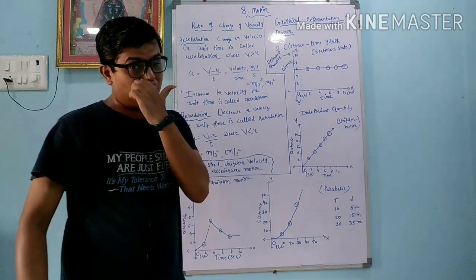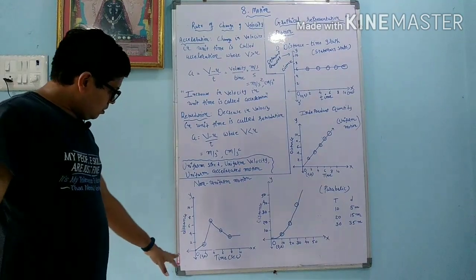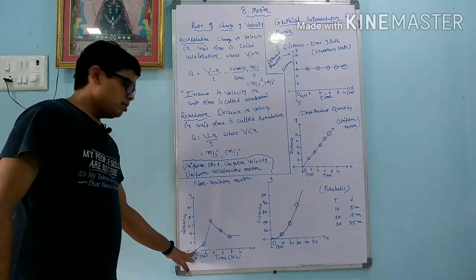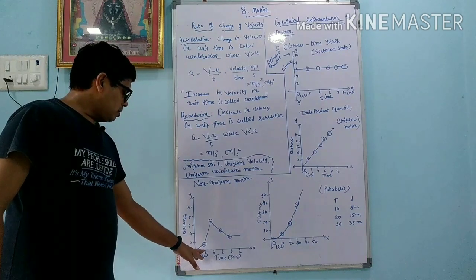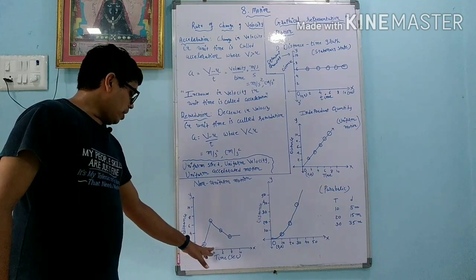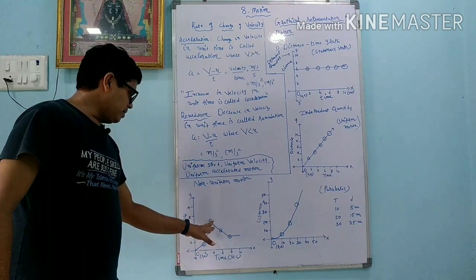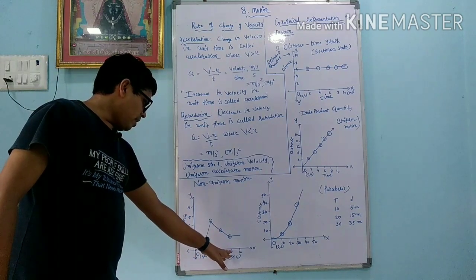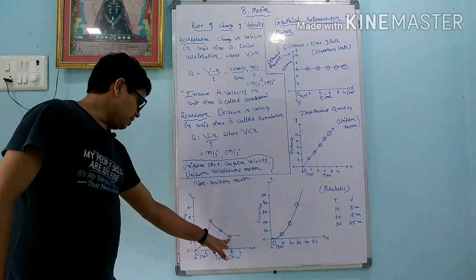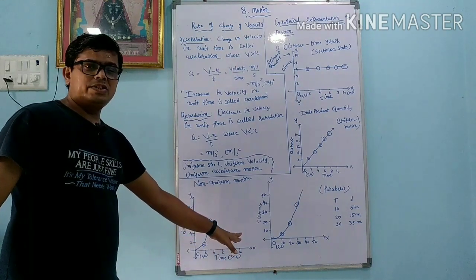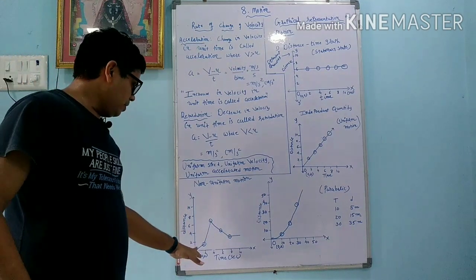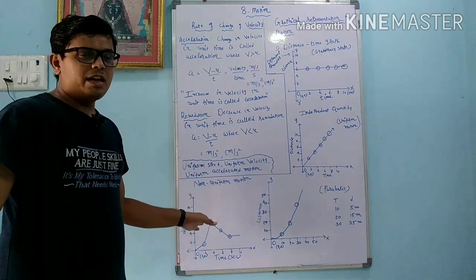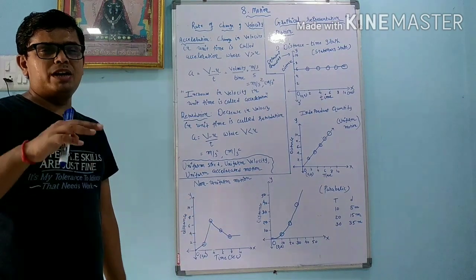Now the third graph: on the y-axis I take distance, on the x-axis I take time. At zero time I cover no distance, at 2 seconds I cover 2 meters, at 4 seconds I cover 8 meters — drastically increased — then at 6 seconds only 6 meters, at 8 seconds about 5 meters, and at 10 seconds I am in a stationary state. All the time I cover different distances, so this type of motion is non-uniform. Whenever you get a zigzag line in the graph, that is non-uniform motion.